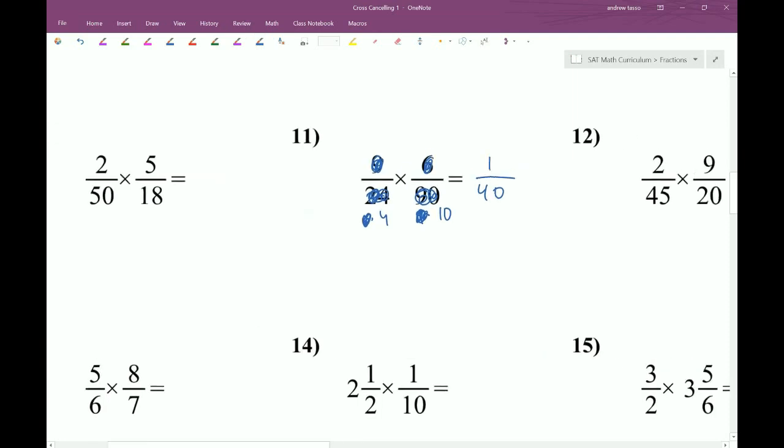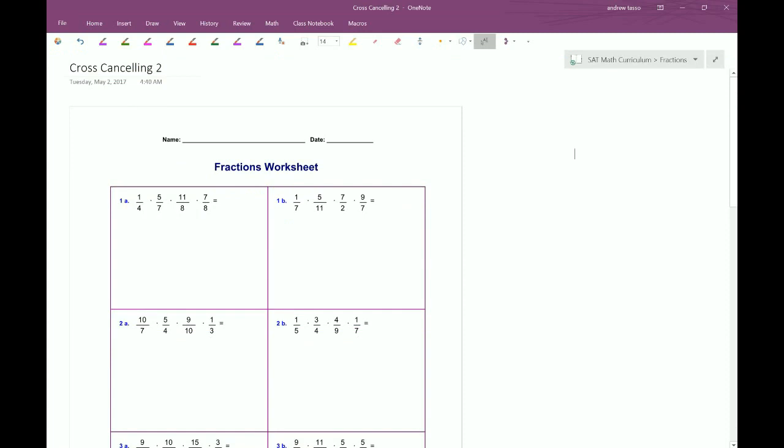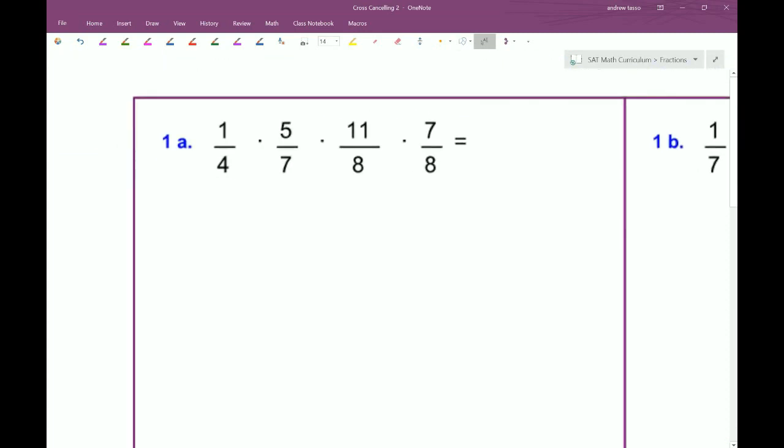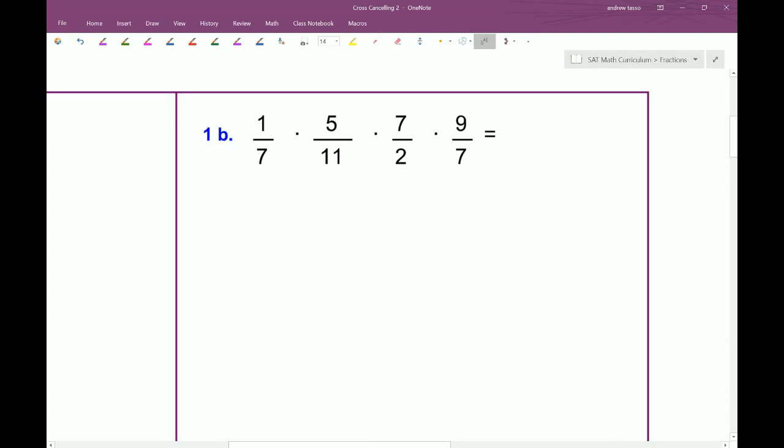Now, this can be extended to having multiple different fractions here. For example, we'll look at 1b right here. The 7s can be canceled. And you might get to a situation like this, where everything is pretty much prime. So in this instance, you really can't go any further. But you know for a fact that you can't go further, so it's not so bad.